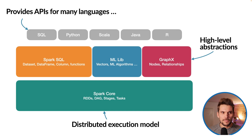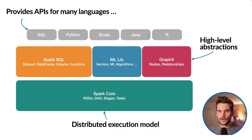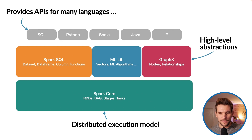Spark provides APIs for many languages. There is SQL for Spark SQL, so we can write plain SQL queries. Or we can use Python — which is what we're doing in this course — Scala, Java, or R. At the bottom we have Spark Core, which is the distributed execution model. It abstracts away all the distributedness of the workload being distributed among an entire cluster of machines.